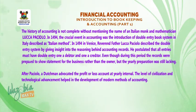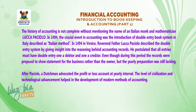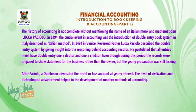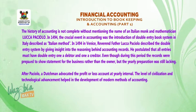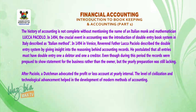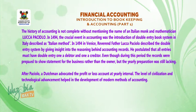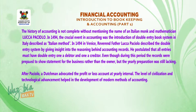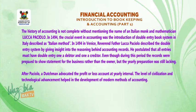The history of accounting is not complete without mentioning the name of an Italian monk and mathematician, Luca Pacioli. In 1494, the crucial event in accounting was the introduction of the double entry bookkeeping system in Italy, described as the Italian method. In Venice, Reverend Father Luca Pacioli described the double entry system by giving insight into the reasoning behind accounting records. He postulated that all entries must have a double entry — one a debtor entry — even though during this period records were prepared to show statements for the business rather than the owner.